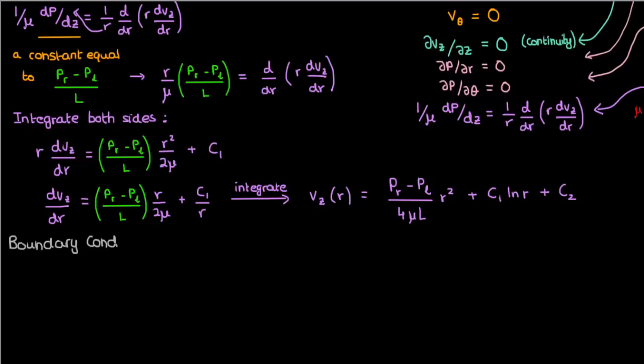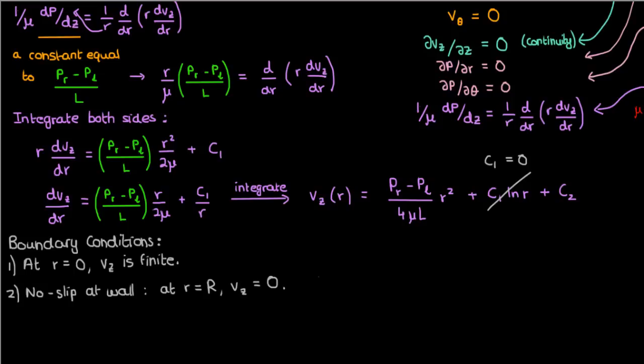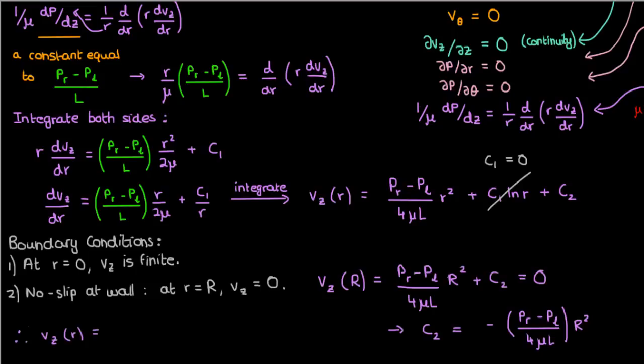We use the boundary conditions. The first boundary condition is that at R equals 0, vz is finite, which means that this natural log term shouldn't be there, and so C1 equals 0, because the natural log at R equals 0 is undefined. The other boundary condition is what we call a no-slip boundary condition, according to which the velocity of the fluid at the wall has to be 0. The fluid cannot slide against the wall, it cannot slip against the wall. So if we plug in vz equals 0 at R equals capital R, then we'll find that C2 is negative capital R squared over 4 mu L times PR minus PL. So therefore, the axial or longitudinal velocity of the fluid is a parabolic function that is maximum at the center.